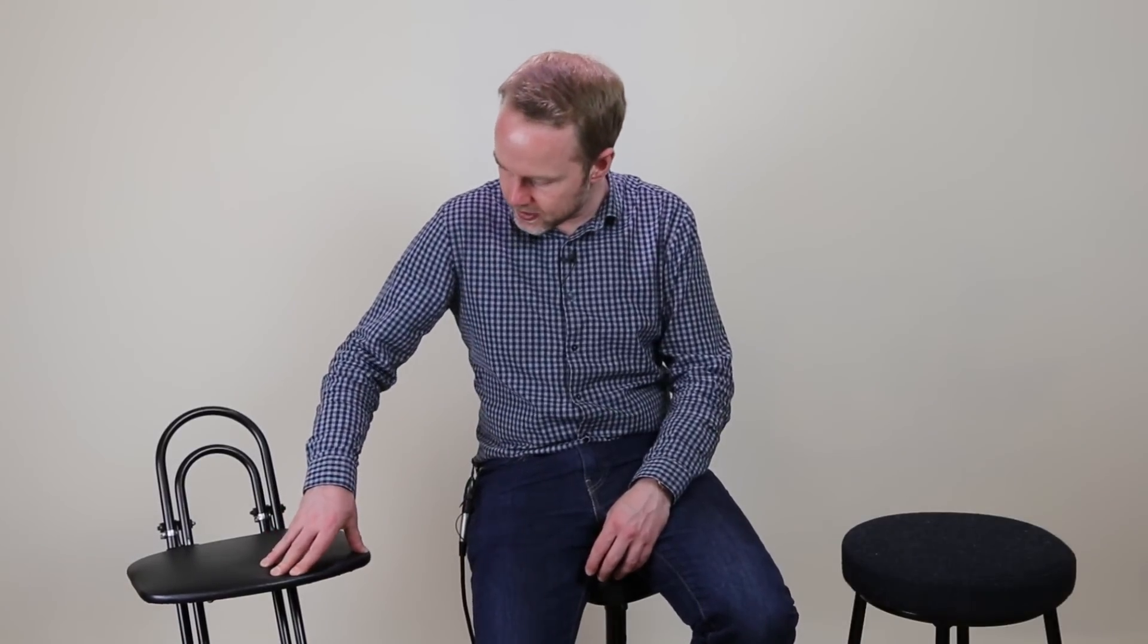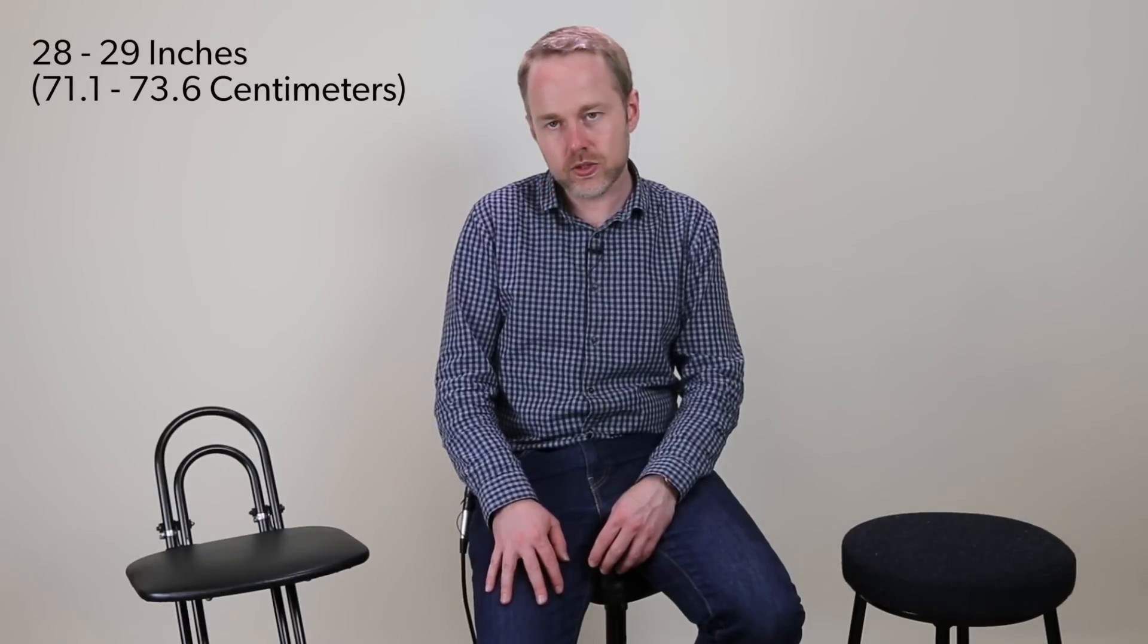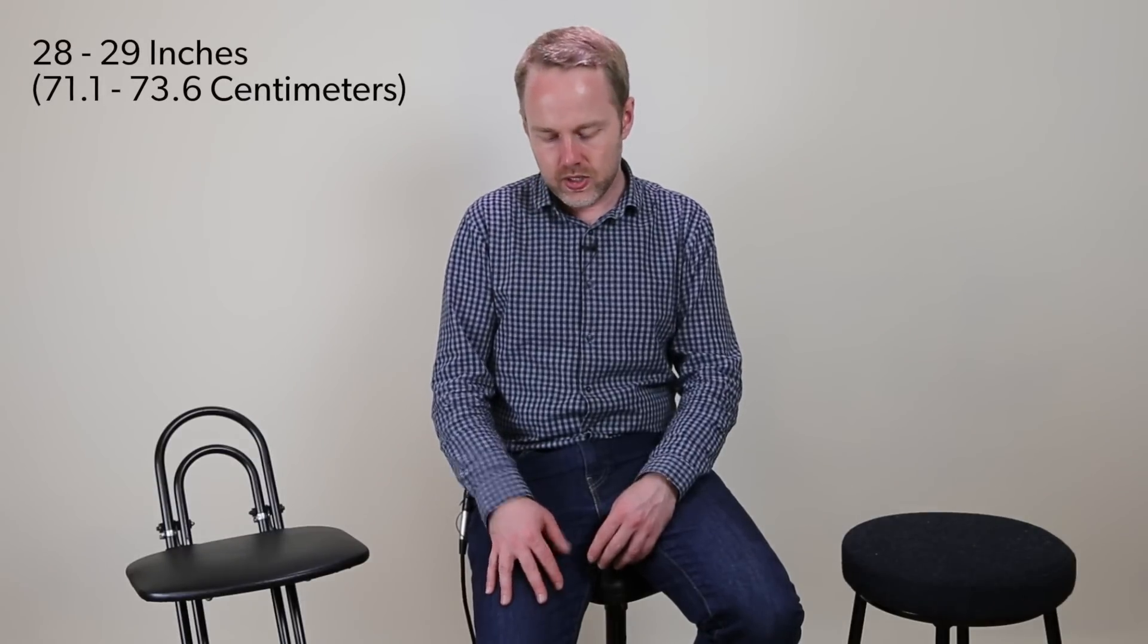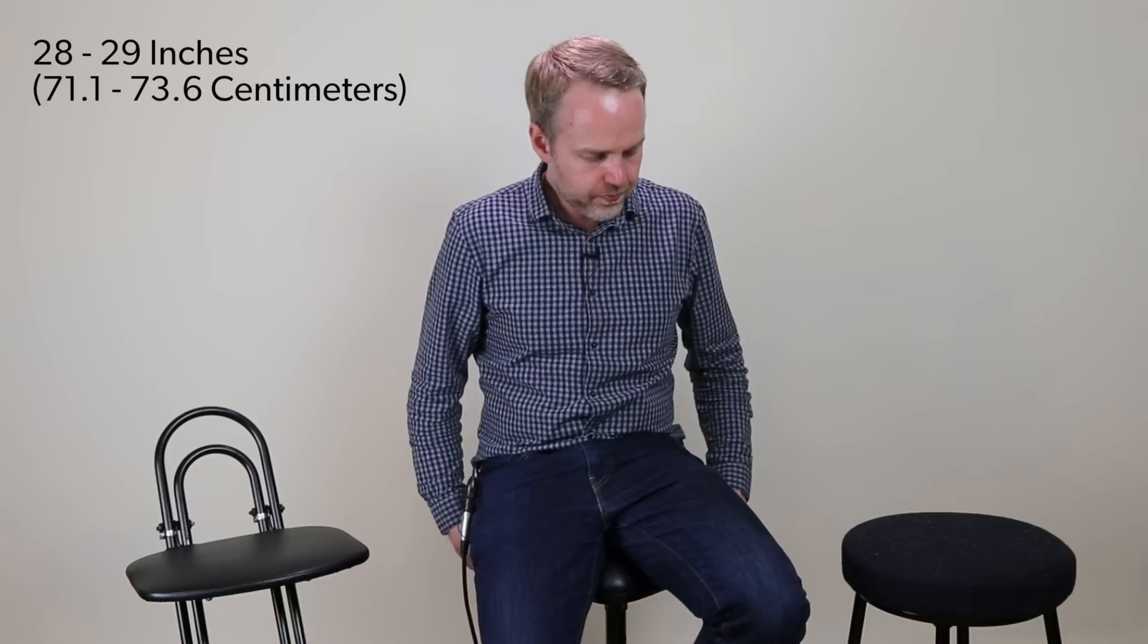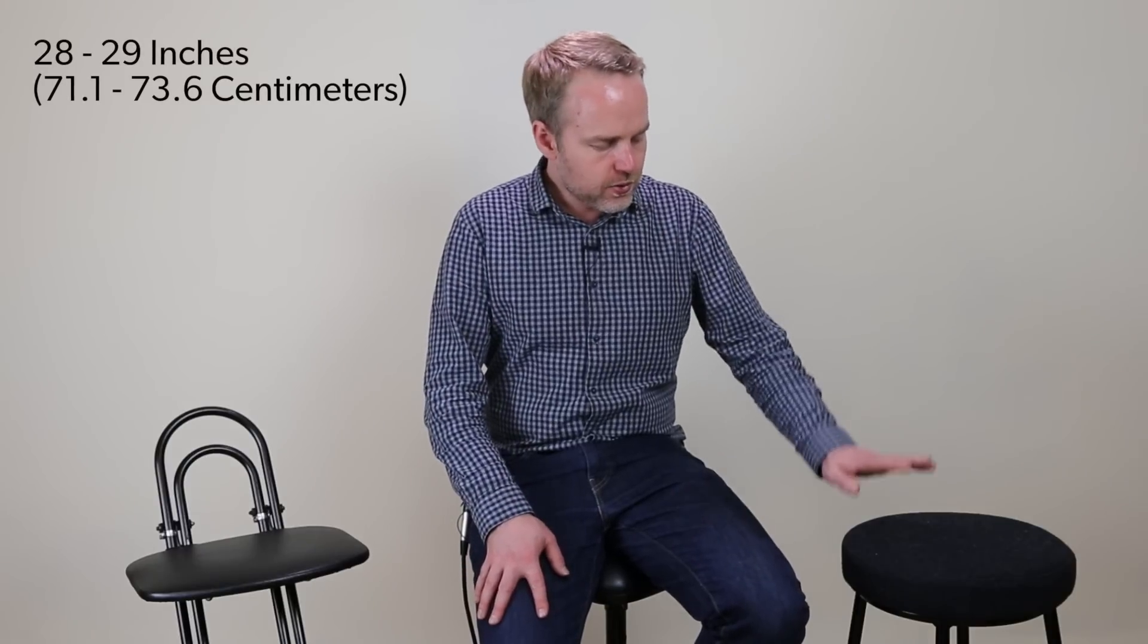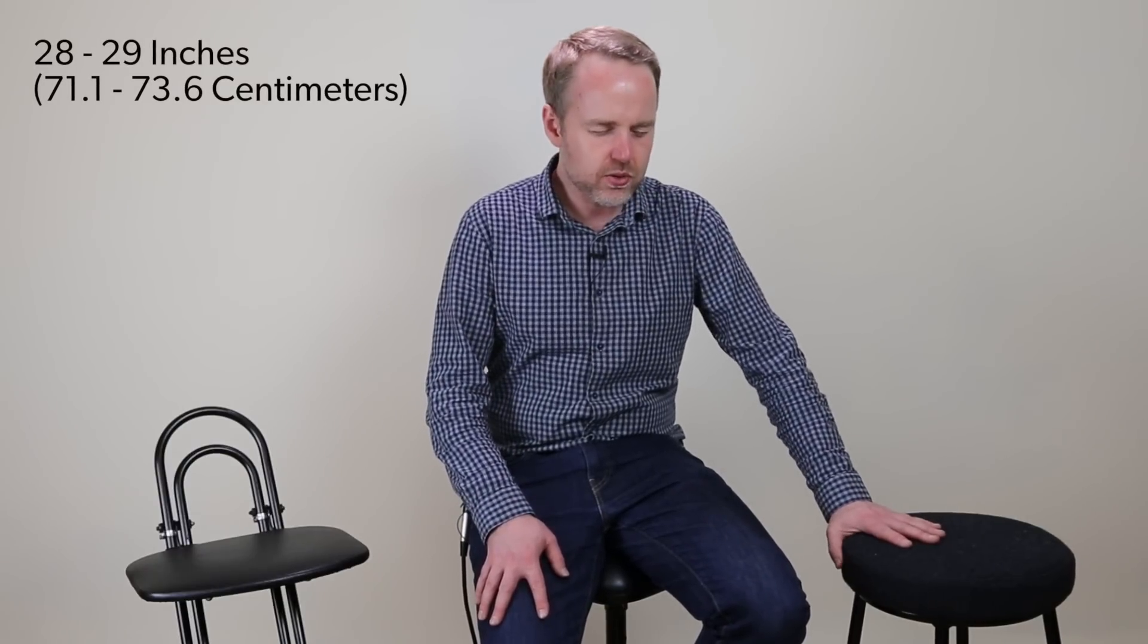Okay, so I have my stools at around 28 to 29 inches. These two are both around that. This actually flexes slightly as I sit on it as well. But it comes out at about 28, 29 inches. This one I have a little lower. This one I think is actually, so that's 72 centimeters. And I think this one comes as standard as 78, which as I said is too high for me.